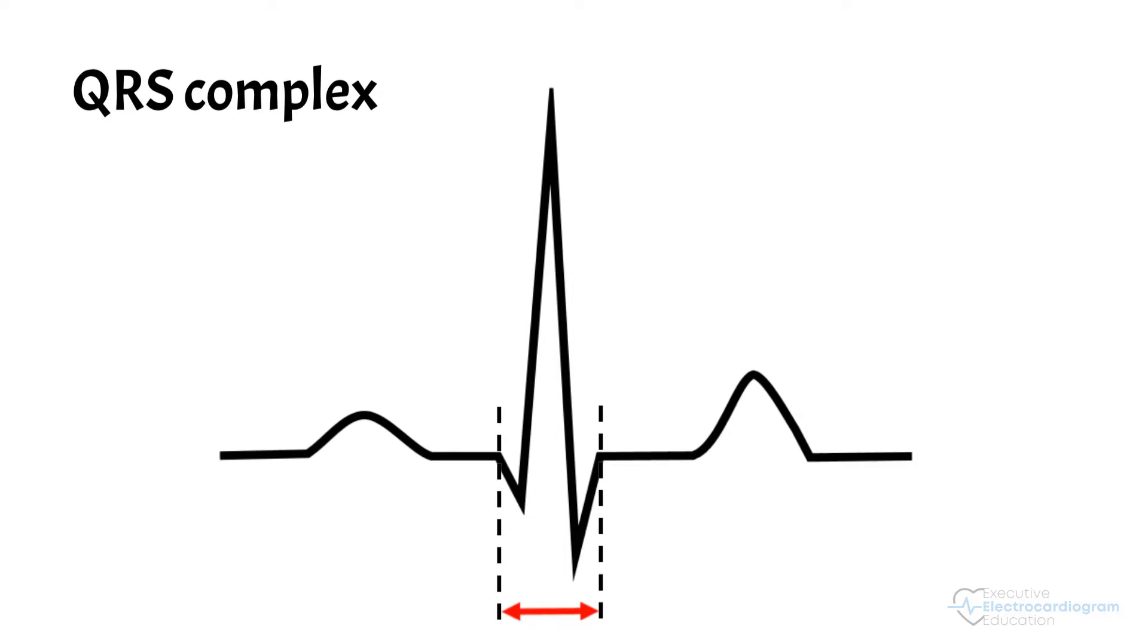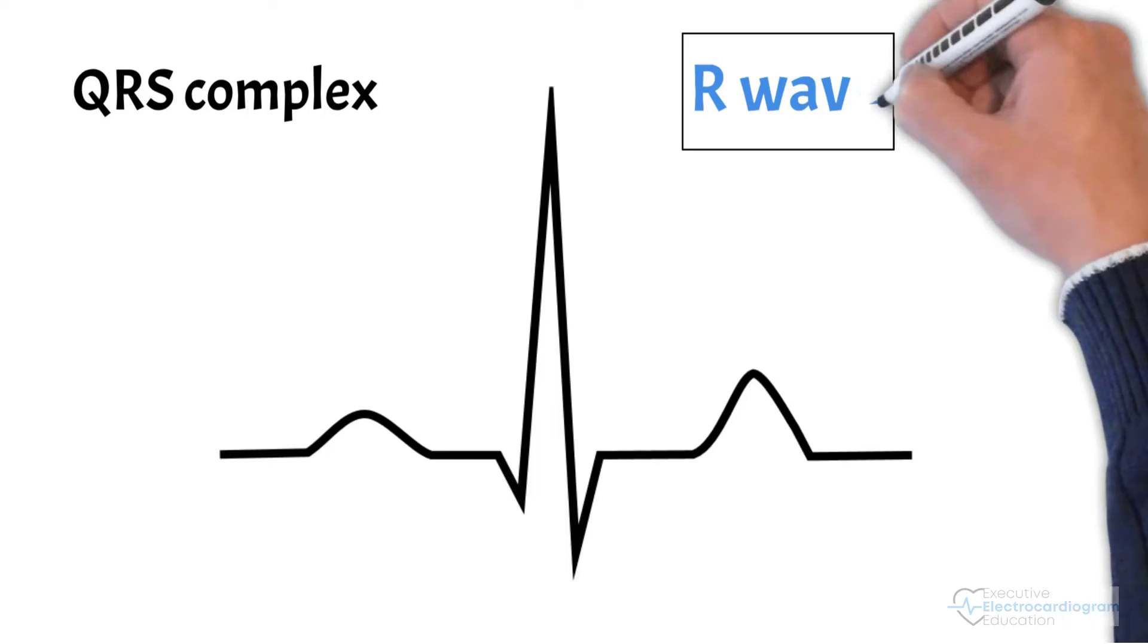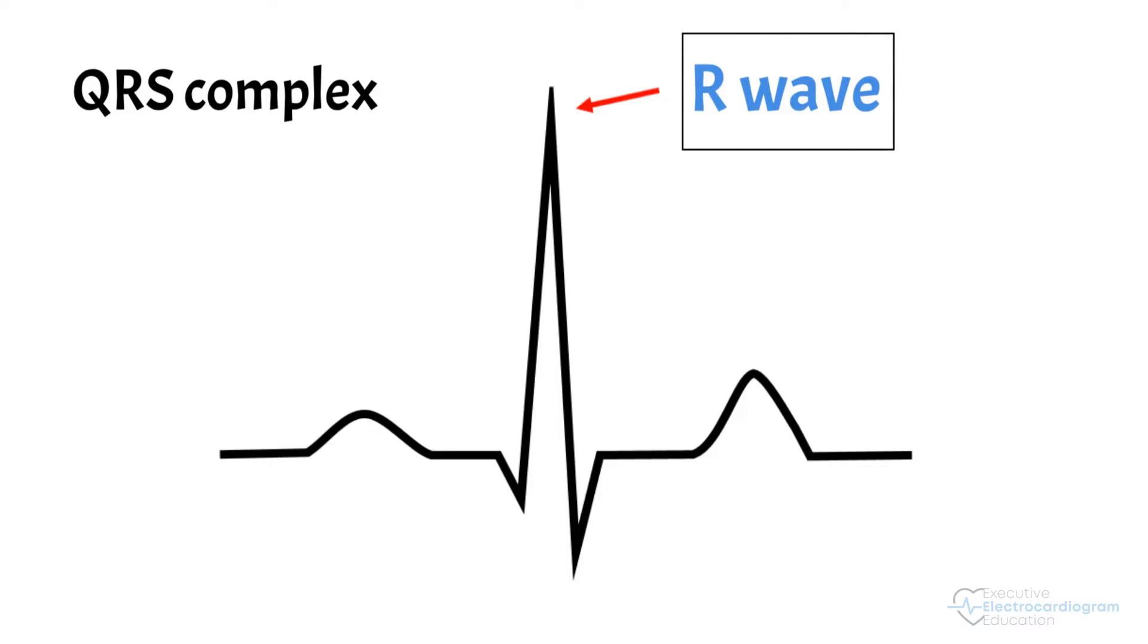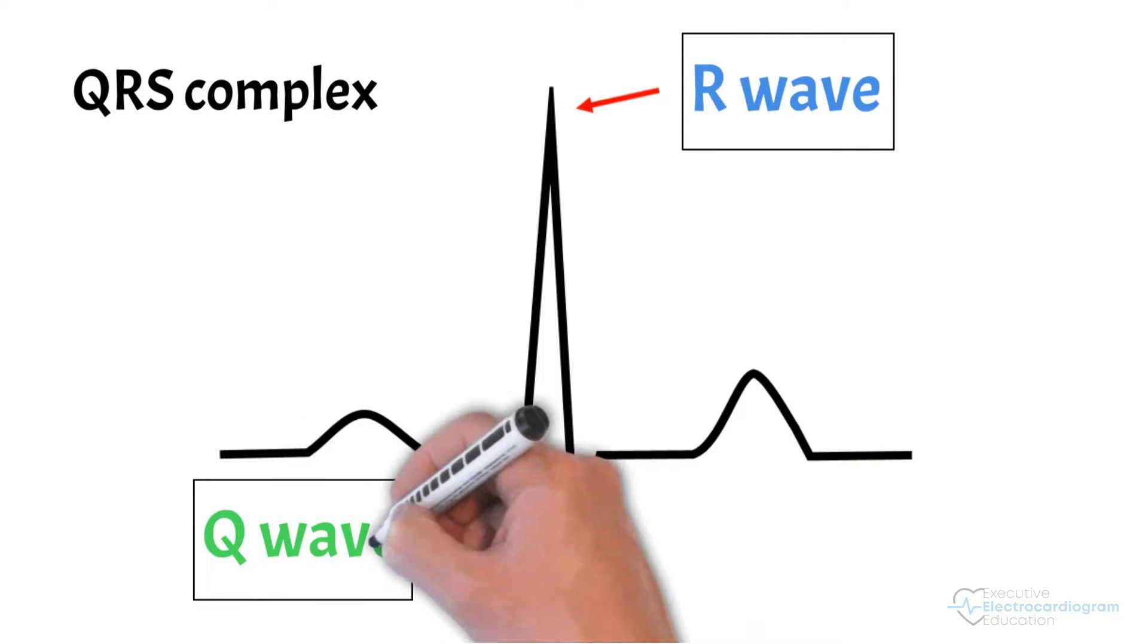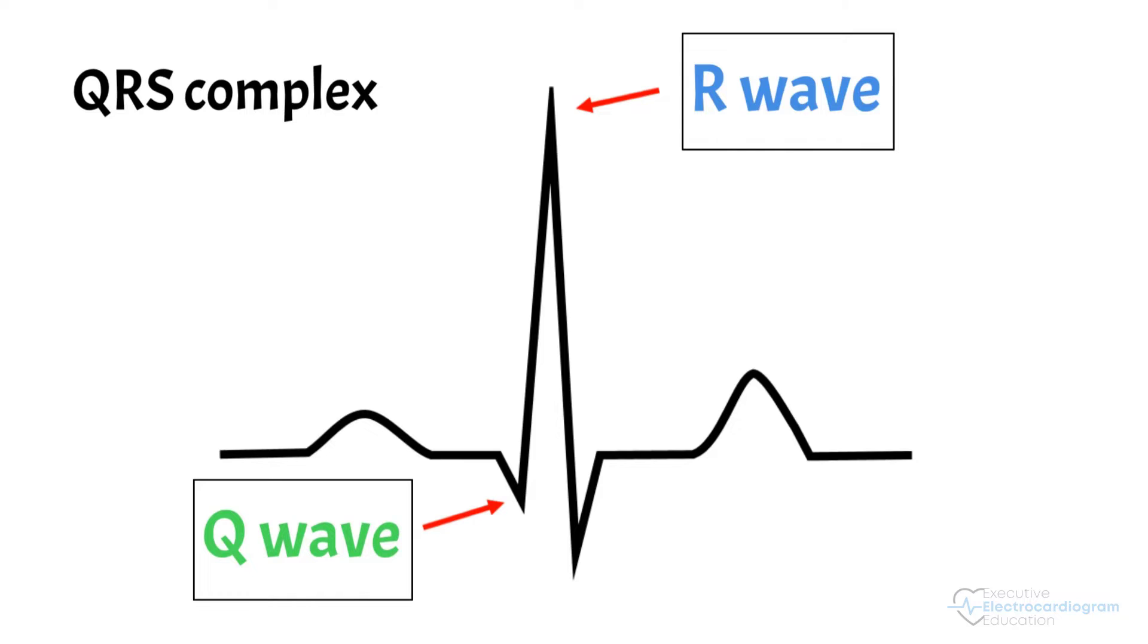The QRS complex may have different components. By definition, the first upward wave of the QRS complex is called an R wave. A downward deflection prior to an R wave is called a Q wave. A downward deflection after an R wave is called an S wave.